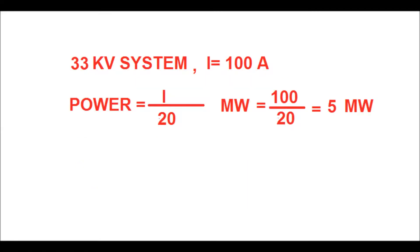For a 33 kV system, if current is 100 amperes, then to get the power in megawatts you have to divide the current by a factor of 20. You will get 100 divided by 20 equal to 5 megawatts.